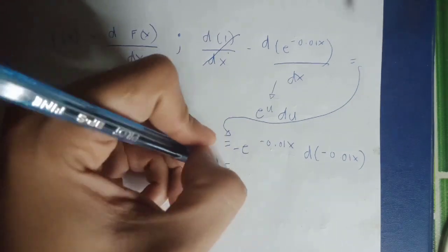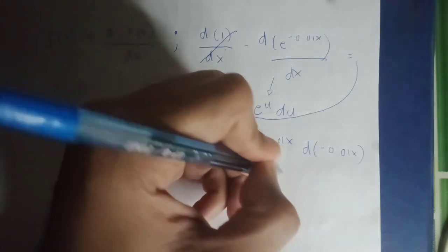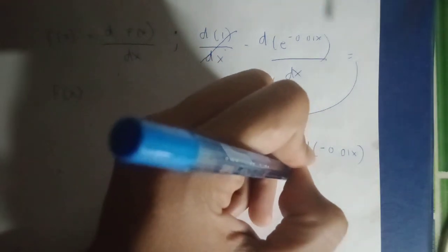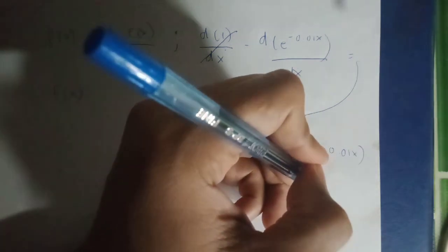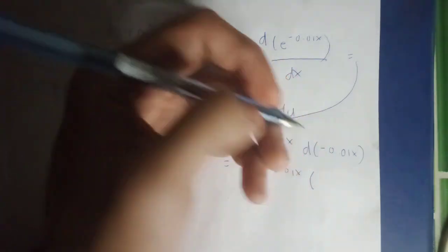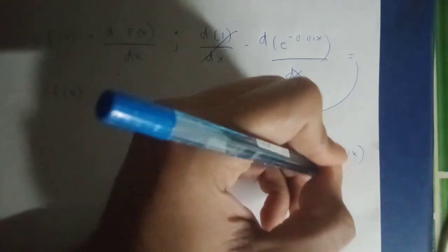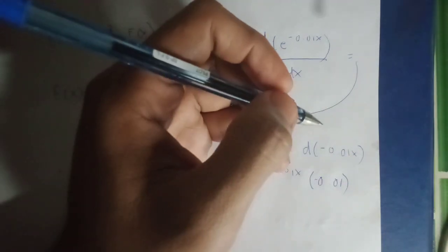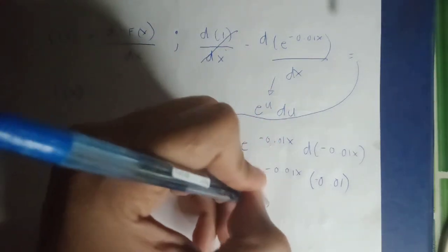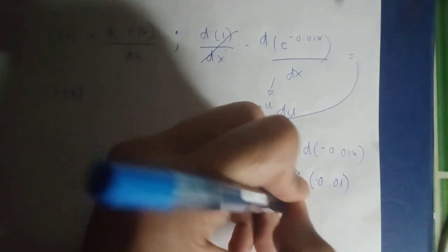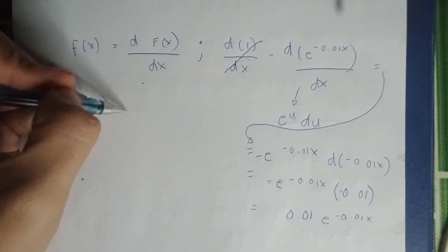And the answer would be negative e raised to negative 0.01x multiplied by 0.01. Pagka pinag-multiply natin ito, ang magiging answer na natin is 0.01e raised to negative 0.01x.